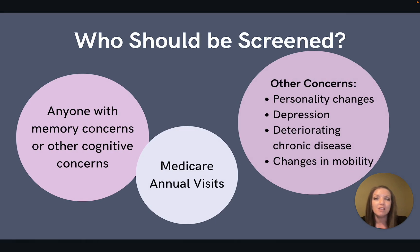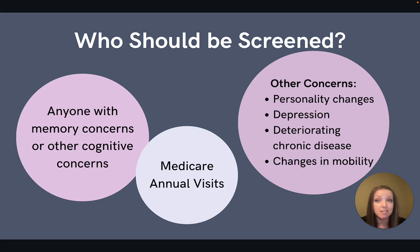So first things first, who should be evaluated for cognitive impairment? These assessments should be completed for any concerns about memory, cognitive changes, or any deficits. Other concerns outside of memory might include personality changes, depression, deterioration of a chronic condition without a clear explanation, or any increasing ambulation difficulties. Keep in mind that especially with older adults, it is important to first rule out other conditions like infections that might also cause these symptoms. A patient might self-report cognitive concerns or might seek care with a family member or friend who reports changes in the patient's cognition or memory.